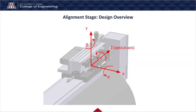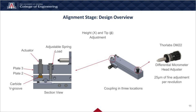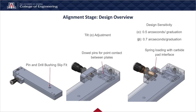Only two axes of adjustment are required for pointing, specifically the alpha and beta adjustments as shown in this figure. Beta adjustment, as well as vertical X adjustment, is accomplished using three adjusters on top of the alignment stage. By turning all three adjusters, the height of the stage can be controlled, and by moving just the differential adjuster, the angle of plate 3 with respect to plate 2 is finely controlled. As can be seen in the section view, all adjusters are spring-loaded to interface with a carbide V-groove. Alpha adjustment is accomplished using a spring-loaded differential micrometer, which rotates the second plate about a coupling pin. This pin has a tight-slip fit with the drill bushing in the plate above, resulting in smooth angular adjustment. There is a screw at the front of the alignment stage to lock this adjustment in place.